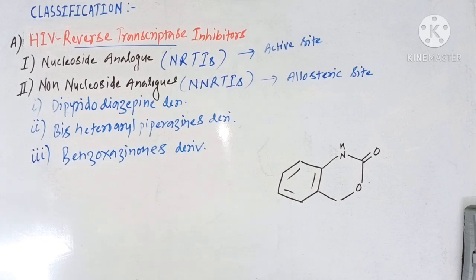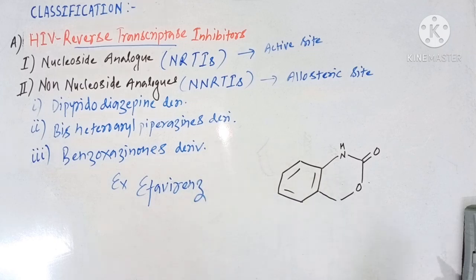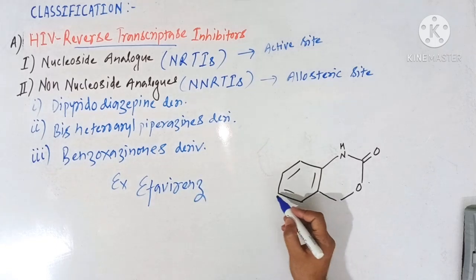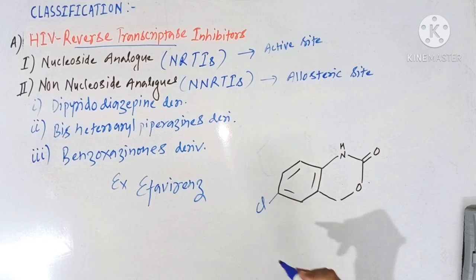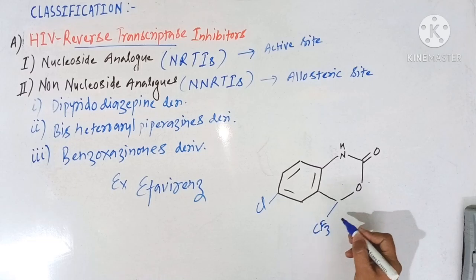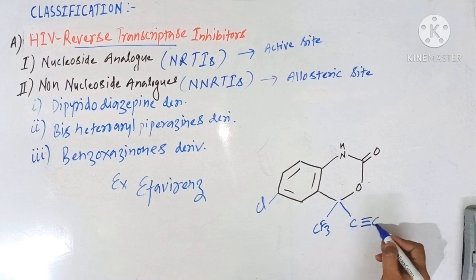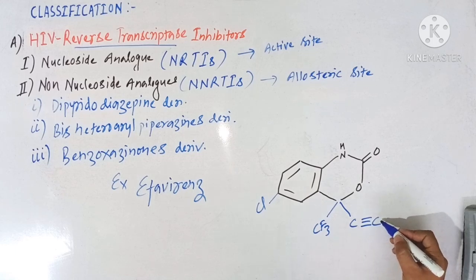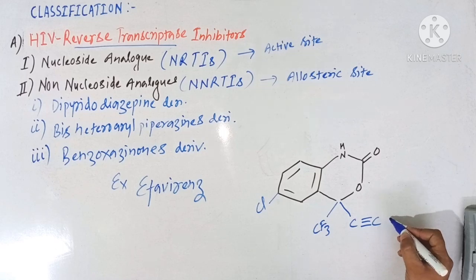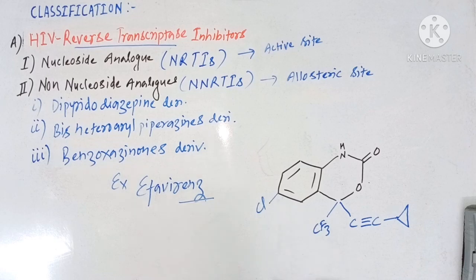The example of a drug which comes under this class is efavirenz. Efavirenz has a chlorine atom at this position, and here there is a trifluoromethyl group. This trifluoromethyl group is linked with a carbon which is again linked with another carbon via a triple bond, and this carbon has a cyclopropane ring. So this is the structure of efavirenz.